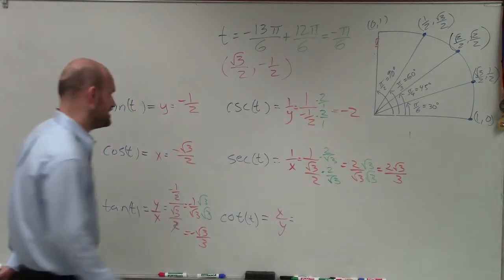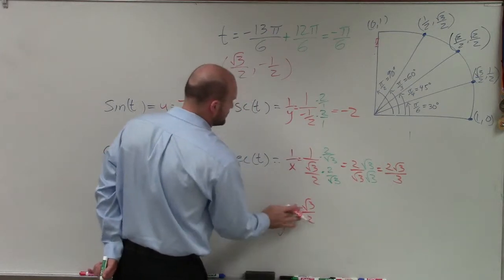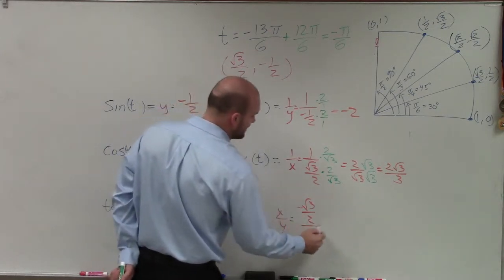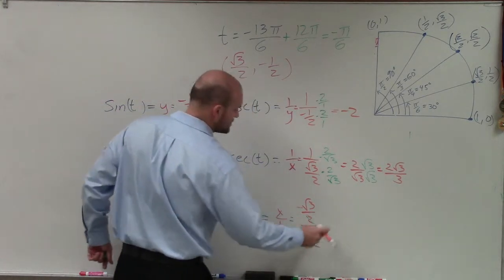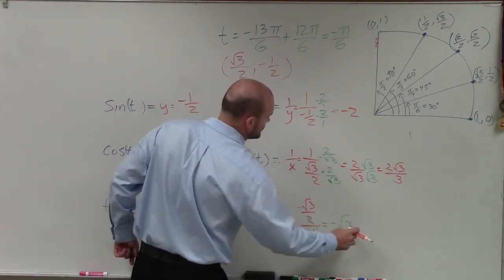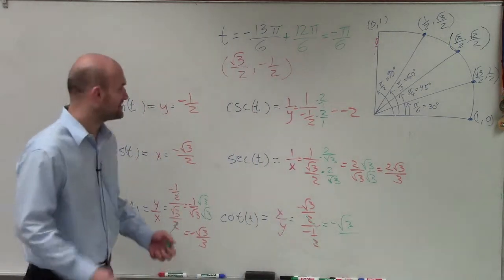Finally, for the cotangent, I have the square root of 3, which is my x-coordinate over 2, divided by a negative 1 half. Again, we can go through and just divide out these 2's. And I'm just left with a negative square root of 3 over 1. So it'd just be negative square root of 3.